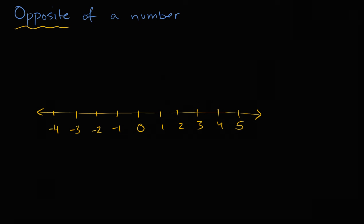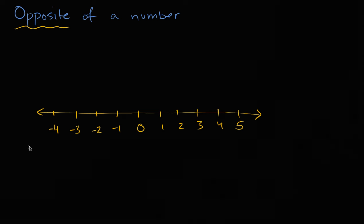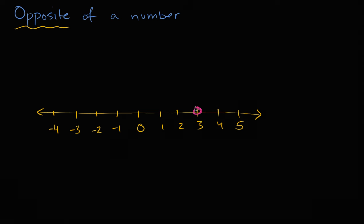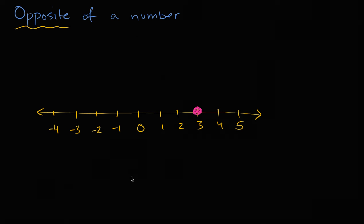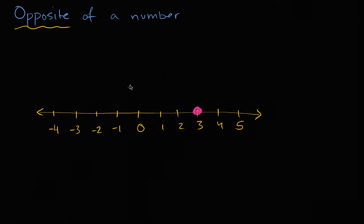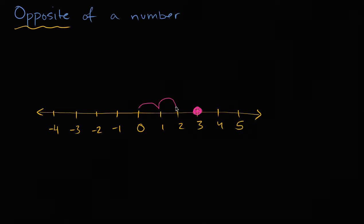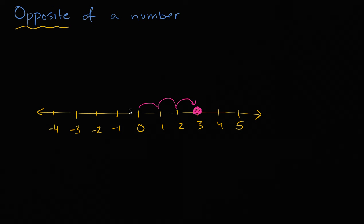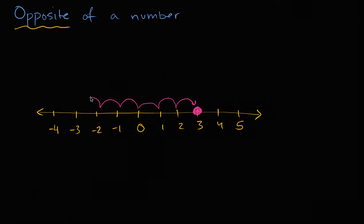So let's pick one of these numbers. Let's say that we pick the number three. What is going to be the opposite of the number three? Well, the opposite of a number is a number that's the same distance from zero, but on the other side. So three is three to the right of zero — one, two, three — so its opposite is going to be three to the left of zero — one, two, three. So the opposite of three is negative three.